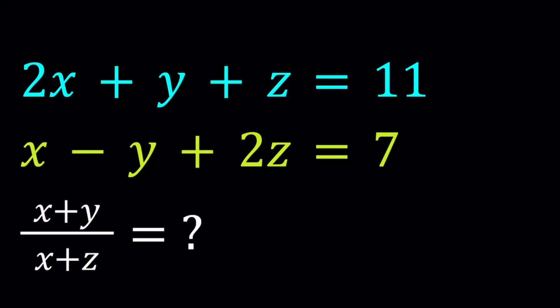Hello everyone. In this video, we're going to be solving a system of two equations. Notice that we have three variables but two equations. So are we going to be able to find numerical values for x, y, z? Well, we can, but there's going to be infinitely many values for which this is going to work. So how is it possible to find this ratio, x plus y to x plus z? That's what we're going to talk about.